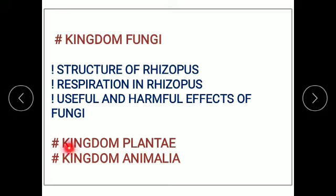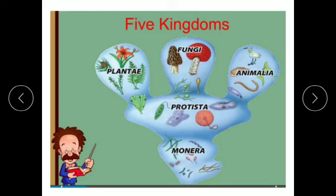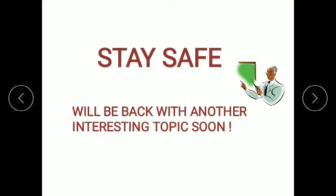We will discuss these two kingdoms in detail in the later part of our curriculum. I hope you have understood and enjoyed today's lesson. I will be sending you a worksheet related to this topic. With this topic, we conclude our chapter, the five kingdom classification. To summarize, we have covered the five kingdoms: kingdom Monera, kingdom Protista, kingdom Fungi, kingdom Plantae, and kingdom Animalia. I will be back with another interesting topic soon. Till then, take very good care of yourself. Stay safe. Thank you.